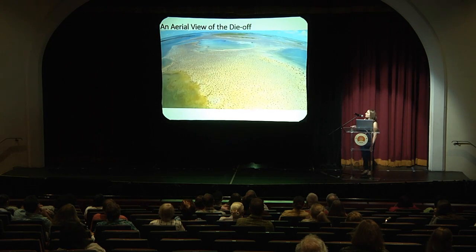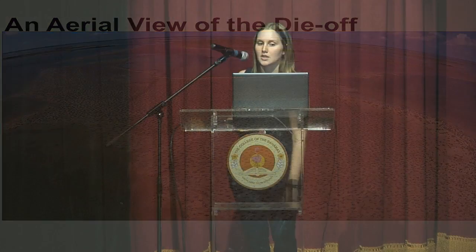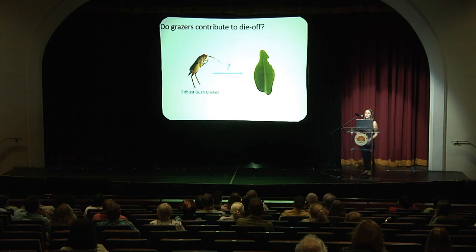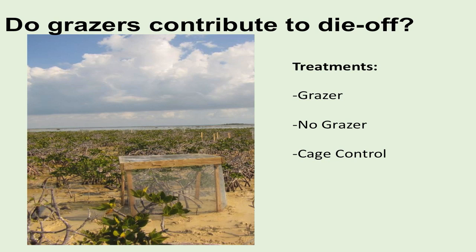This is an aerial view of the die-off area — as you can see, it's quite extensive. One of the first things we noticed was that the leaves looked really torn up and chewed, so that led us to question what's out here that could be eating the leaves. We set up a cage exclusion experiment in May 2014 — still ongoing — to observe how much chewing is going on, looking specifically at the robust bush cricket and other macro grazers.